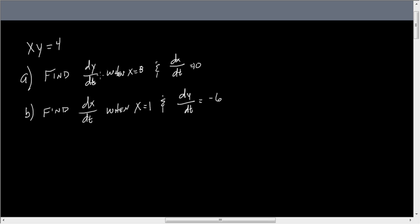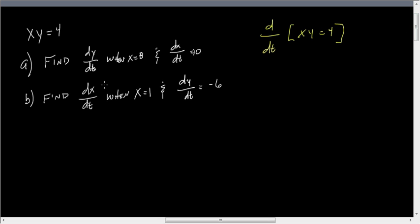Okay, so in this first one, we're asked to find dy/dt when x equals 8, dx/dt is 10. All right, so the first thing we need to do is we need to take the derivative of this thing with respect to t. So the derivative with respect to t of xy is 4. And I put all of that in there because we have to take the derivative of both sides.